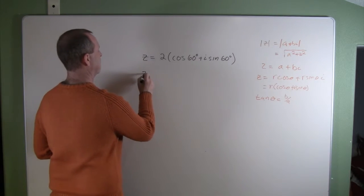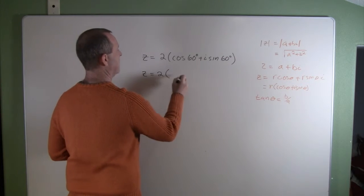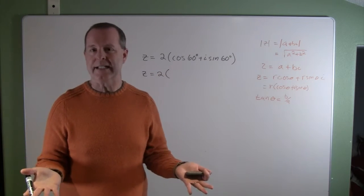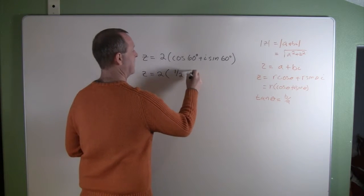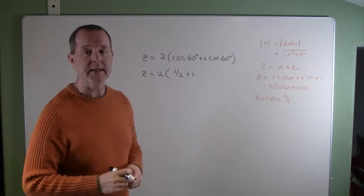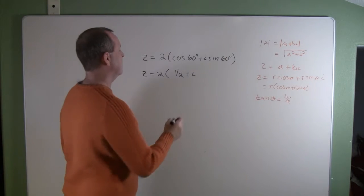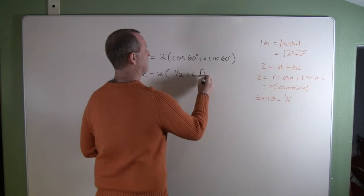So let's rewrite what we know: 2 times cosine 60 degrees, we know what that is, that's 1/2, plus i times sine 60 degrees, that's one of the 16 that we know, and that's root 3 over 2.